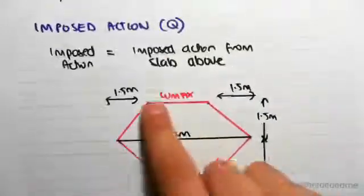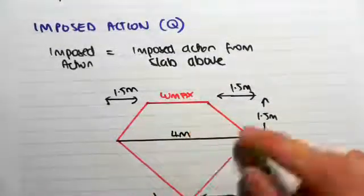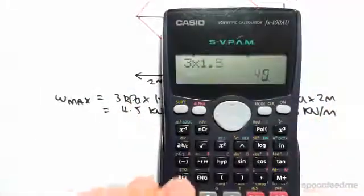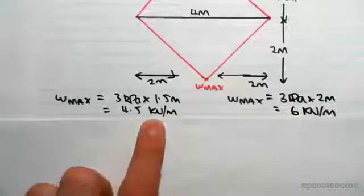So we multiply, so for the trapezium, so for this one here, we're going to go 3 kPa by the perpendicular distance, 1.5 meters. So 3 by 1.5 gives us 4.5 kilonewtons per meter.